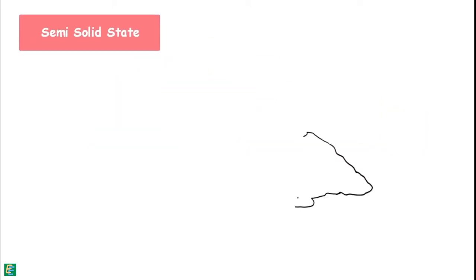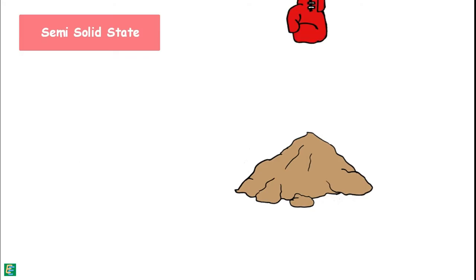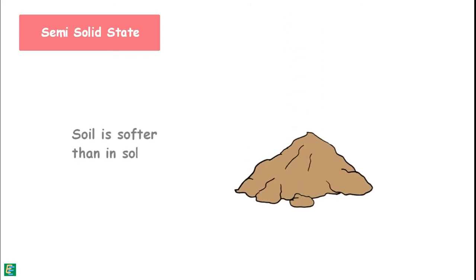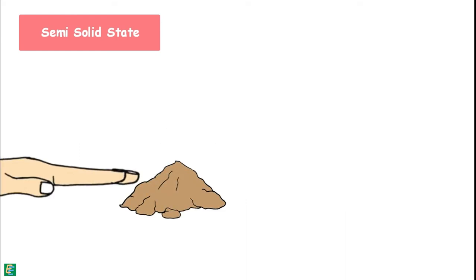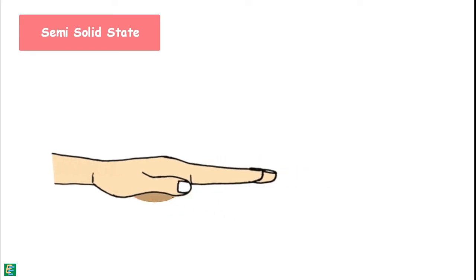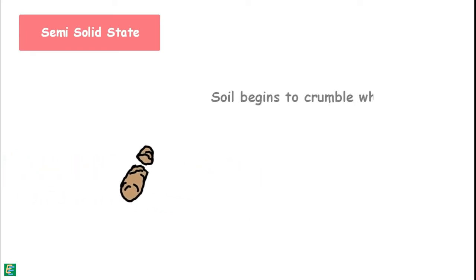In the semi-solid state, the fine-grained soil is harder than in the plastic state, but softer than in the solid state. In the semi-solid state, soil loses its plasticity. We know the soil has reached the semi-solid state when it begins to crumble when rolled into threads of 3 mm diameter.